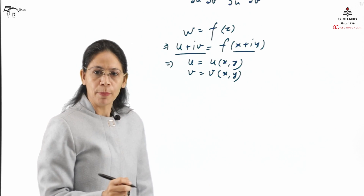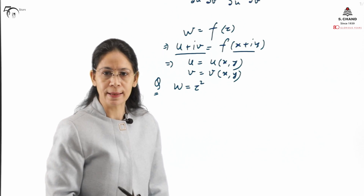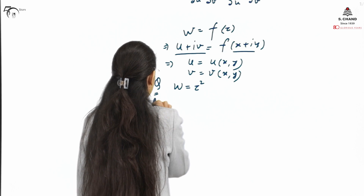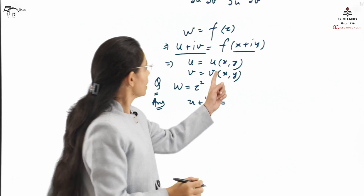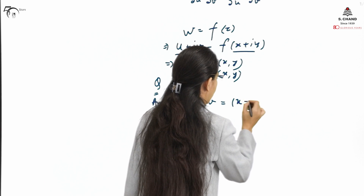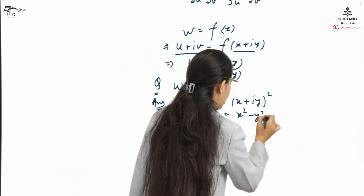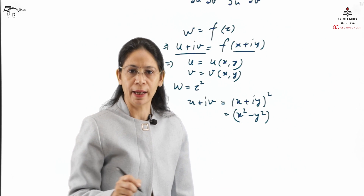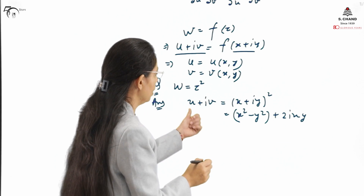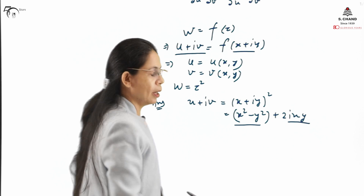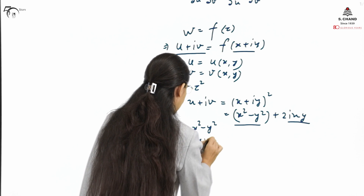We can take one example to make this more clear. Suppose the transformation w = z². So w = u + iv and z = x + iy, thus w = (x + iy)². Expanding this, we get x² − y² + 2ixy, using the fact that i² = −1. We can see that it has been resolved into real and imaginary parts: u = x² − y² and v = 2xy.